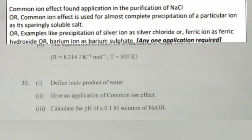Answer: Common ion effect is used for almost complete precipitation of a particular ion as its sparingly soluble salt. Examples: precipitation of silver ion as silver chloride or ferric ion as ferric hydroxide or barium ion as barium sulfate.